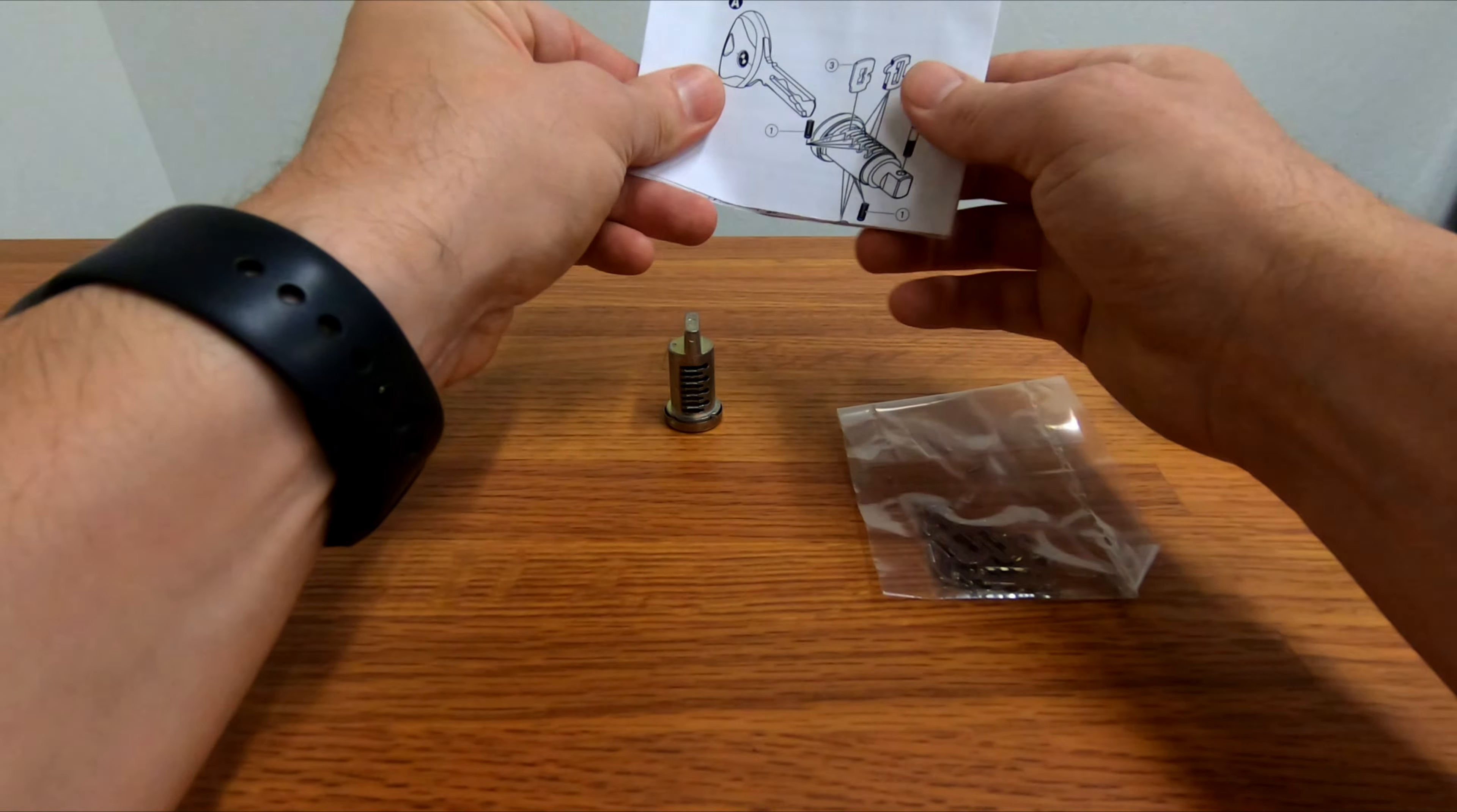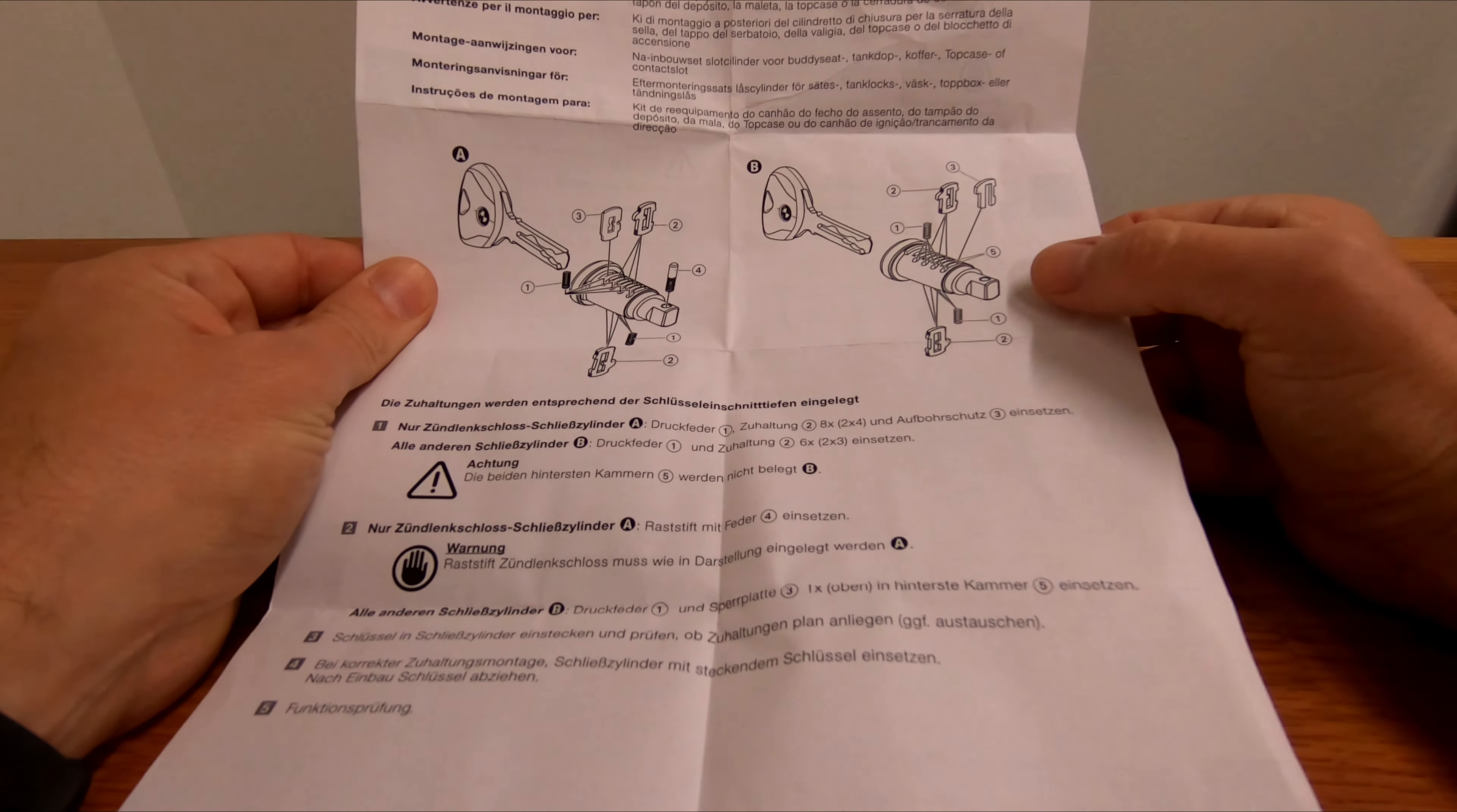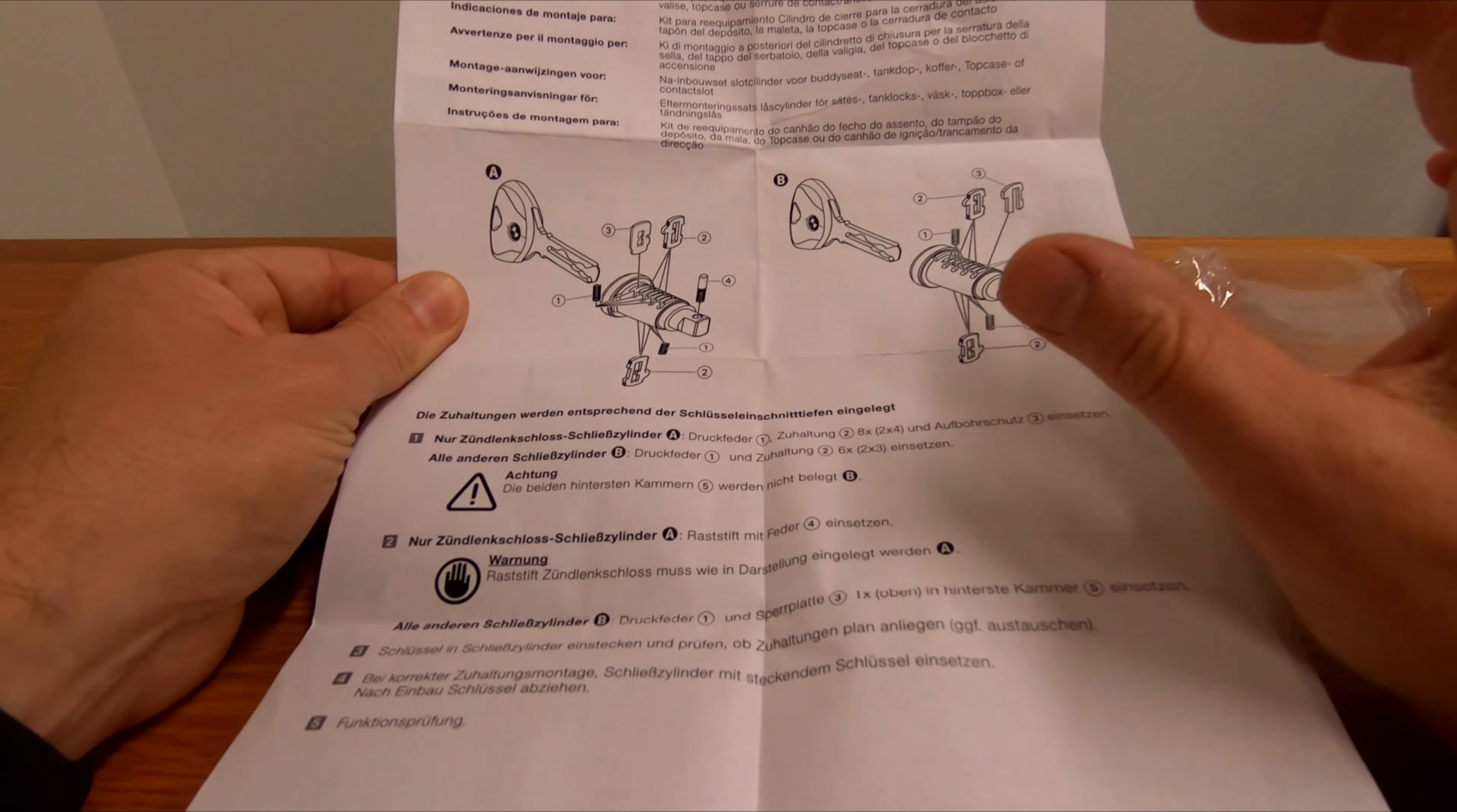You get some limited instructions, but really the biggest takeaway is A is for the ignition and you can see that part right here, number three, is what's different between B. So we're just focusing on B because it has this tab here and this little tab key has to do with it securing itself inside of its housing.